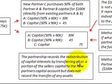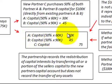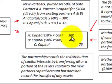The partnership records the redistribution of the capital interest by transferring all or a portion of the seller's capital to the new partner's capital account, but does not record the transfer of any assets. As shown in the recording: Partner A's capital is debited by $30,000, Partner B's capital is reduced by $45,000, and Partner C's capital is increased by $75,000. There is no transfer of assets — only a reduction in A and B's capital accounts and an increase in Partner C's capital account.